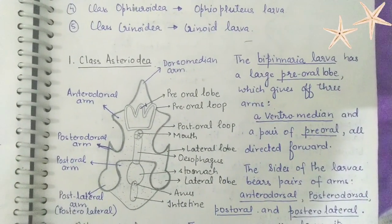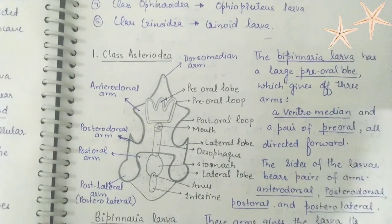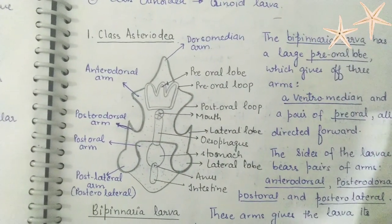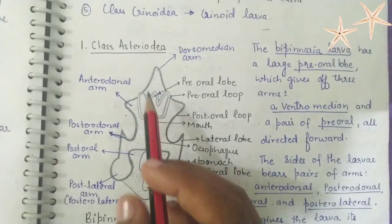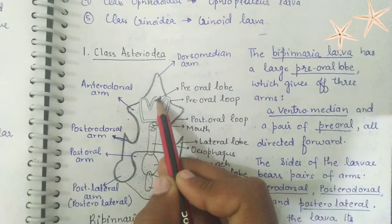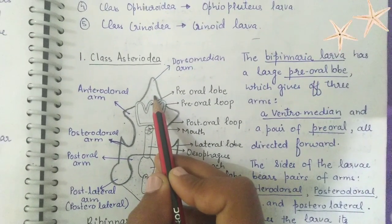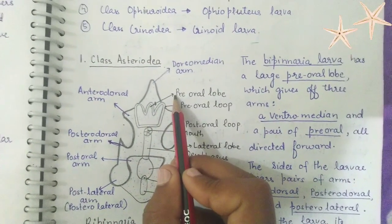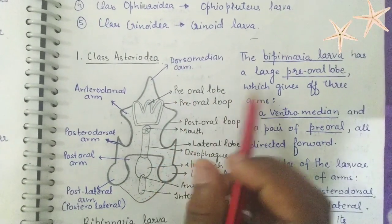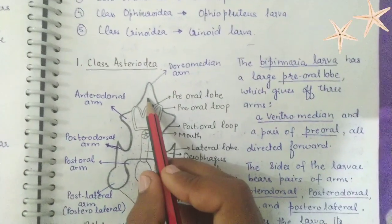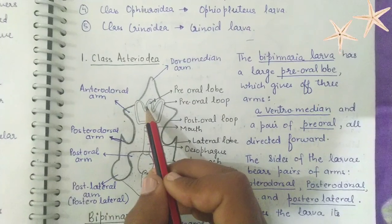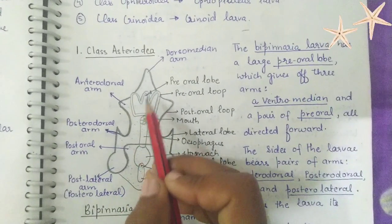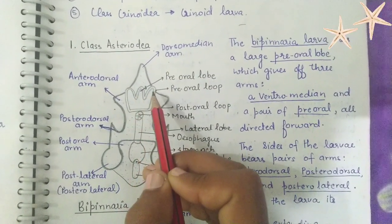The first larva is from Class Asteroidea — the bipinnaria larva. After the formation of diplurula larva, the bipinnaria larva forms. The bipinnaria larva has a large pre-oral lobe which gives off three arms: one ventromedian and a pair of pre-oral arms, all directed forward. These are the three arms of the pre-oral lobe.